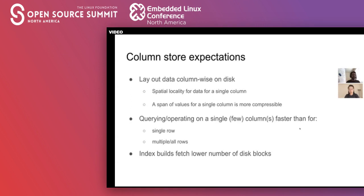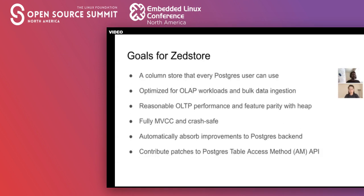Those are some generic expectations. More specific ones for ZStore: every Postgres user can use it. This has been discussed in the Postgres community for a long time — Postgres doesn't have a column store and we need one, and it's demanded by enterprise customers. We want ZStore to be optimized for OLAP workloads, while also performing reasonably well for OLTP style workloads and maintaining feature parity with the heap storage layer that you get out of the box with Postgres.